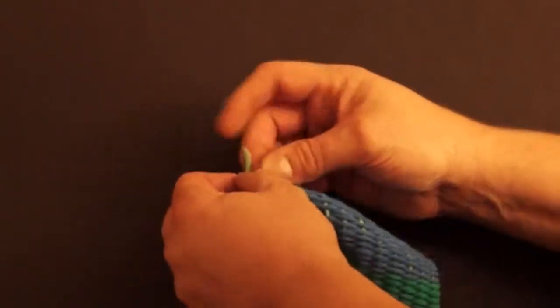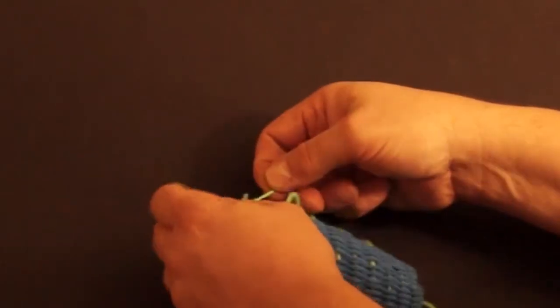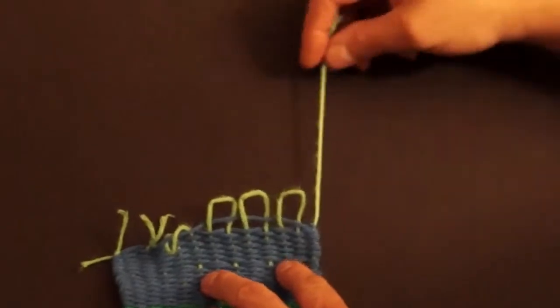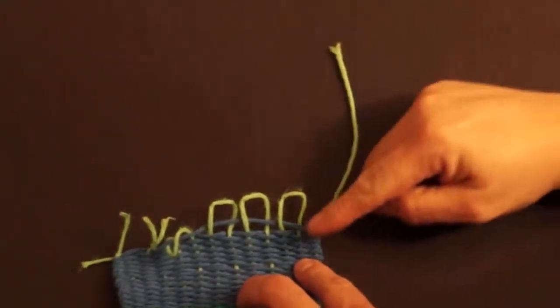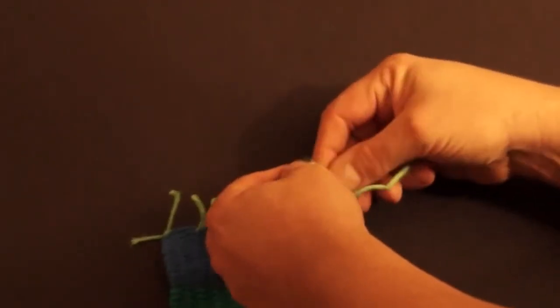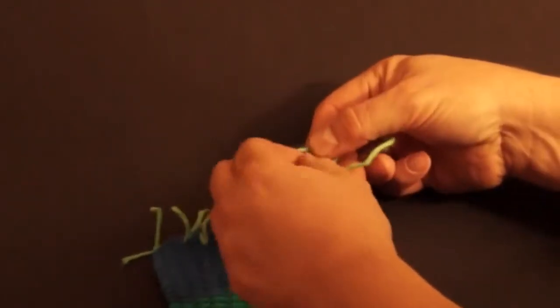There's going to be one more thing about doing it this way that you'll need to know. When we get down here to the end, there's one piece here on the end that is not part of another loop. So, what we can do is tie it to the one next to it. And then, that'll be secure.